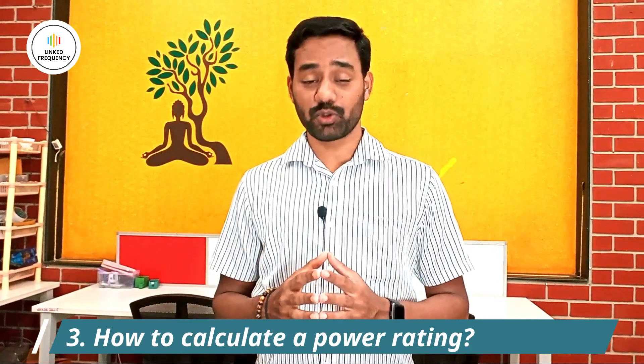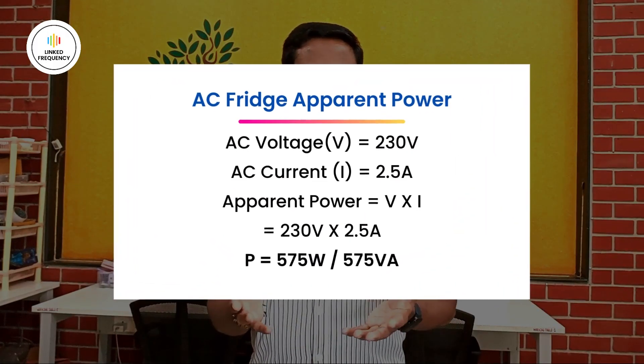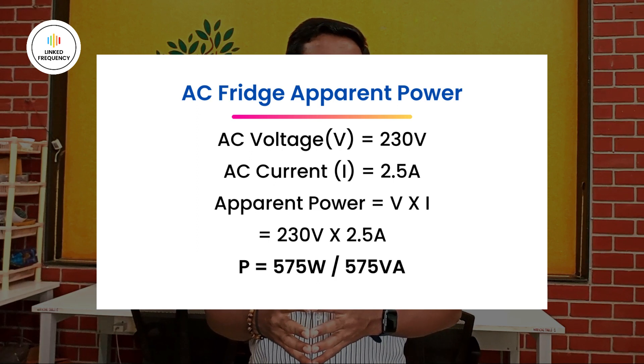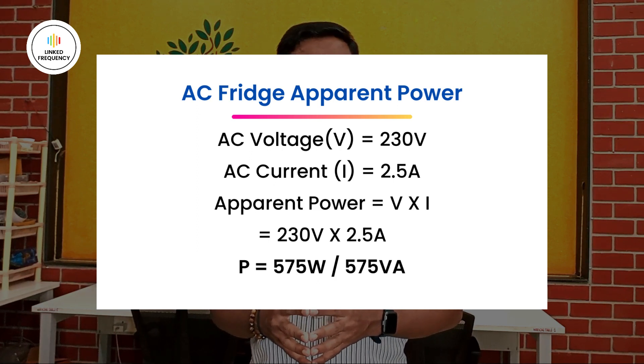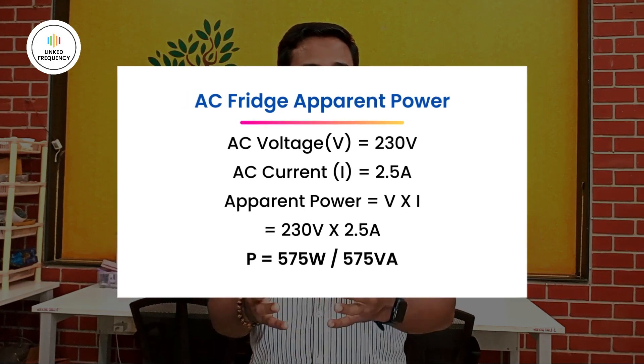Now let us talk about how to calculate power rating. I will consider a couple of examples. The first example is an AC refrigerator or freezer. We know that it uses 230 volts and 2.5 amperes of current. Using these two values, we can calculate the apparent power, which is simply the product of voltage and current: 230 V × 2.5 A = 575 watts or 575 volt-amperes. This is how simple it is to calculate the power rating for electrical equipment.